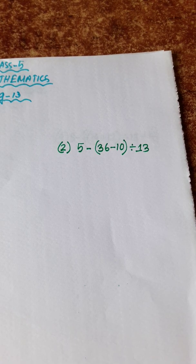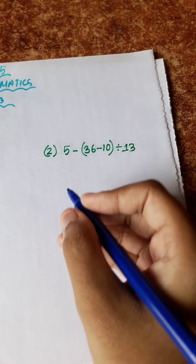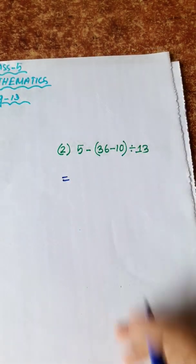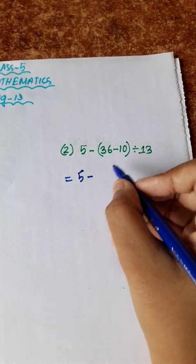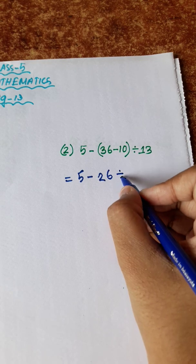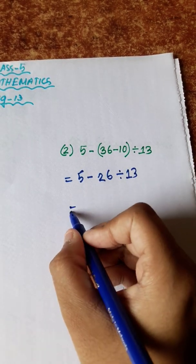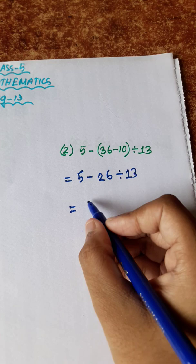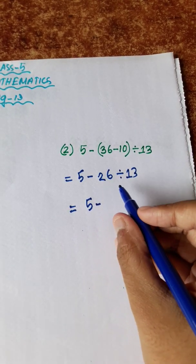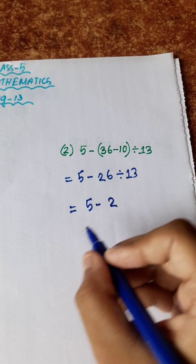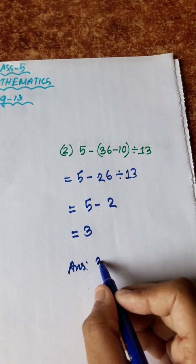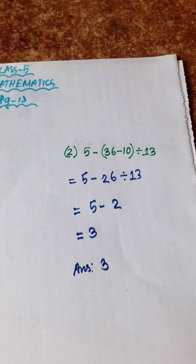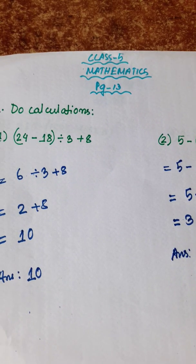Now let's take a look at number 2: 5 minus, bracket 36 minus 10, bracket closed, divided by 13. Inside the bracket: 36 minus 10 is 26. Divided by 13 is 2. Then 5 minus 2 is 3. So answer is 3.